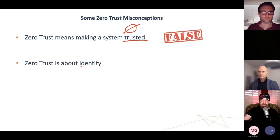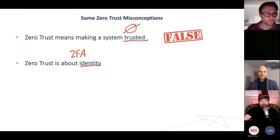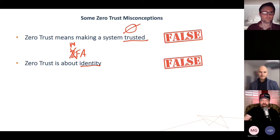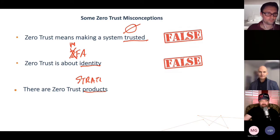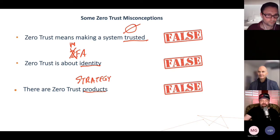Second misconception: Zero Trust is about identity. We hear that a lot — MFA, all that kind of stuff. The MFA vendors are very good at marketing because they've taken 2FA and changed that 2 to an M and made you think it's a completely different product when it's not. Zero Trust isn't about identity — it consumes identity. And then there are Zero Trust products. No, there are not. Zero Trust is a strategy.